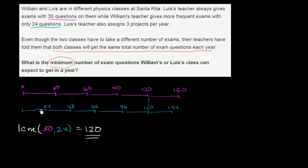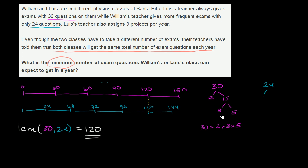Now, there are other ways that you can find the least common multiple, other than just looking at the multiples like this. You can look at it through prime factorization. 30 is 2 times 15, which is 3 times 5. So we could say that 30 is equal to 2 times 3 times 5. And 24 is equal to 2 times 6, and 6 is equal to 2 times 3. So 24 is equal to 2 times 2 times 2 times 3.